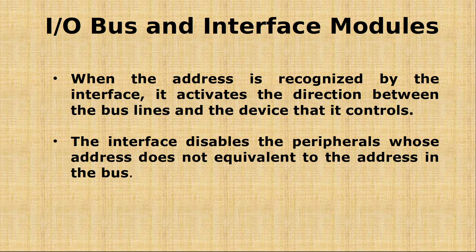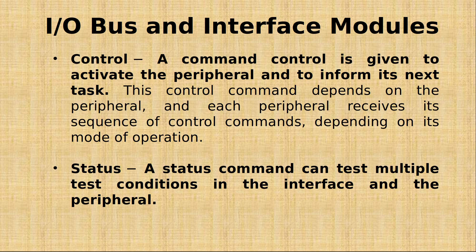The address line checks whether the address is correct. The control command is given to activate the peripheral and to inform it of the next task. After connecting the processor and the peripheral devices, the control command tells the peripheral device what task to perform next. Each peripheral receives its own sequence of control commands depending on its mode of operation.